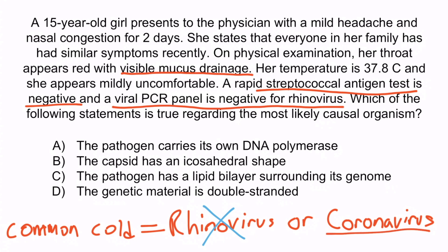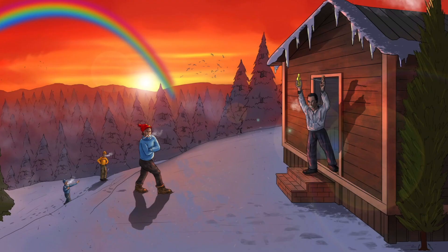Now that we think it's coronavirus, which of the answers is most likely true? C is the correct answer. This is describing an envelope. The envelope is formed when virions bud off from the host cell, taking with it a piece of the cell membrane — the lipid bilayer. This is what makes the virus enveloped. Enveloped viruses are more common than naked viruses, so assume every virus is enveloped unless we have a straight-up naked person in an image. There are no naked people in this image.